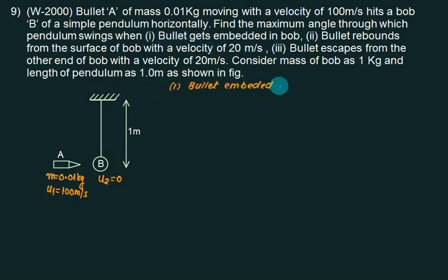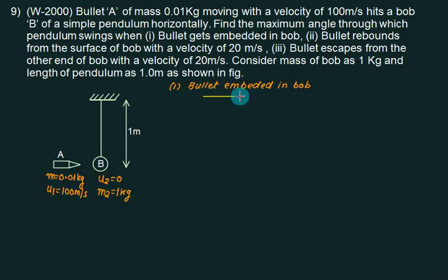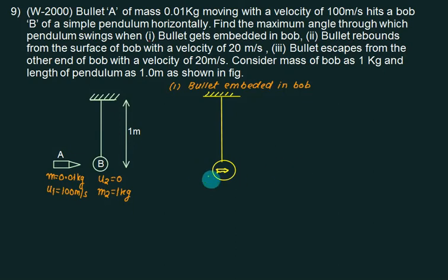First case: bullet is embedded in the bob. The mass of the pendulum bob is taken as 1 kg. After impact, the bullet will be inside the bob — that is called embedded. Second case: the bullet rebounds. Third case: the bullet escapes.